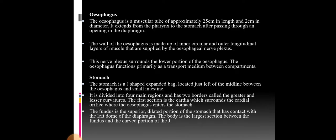The next organ in the GIT is the oesophagus. The oesophagus is a muscular tube of approximately 25 centimeters in length and 2 centimeters in diameter. It extends from the pharynx to the stomach after passing through an opening of the diaphragm. The wall of the oesophagus is made up of inner circular and outer longitudinal layers of muscle that are supplied by the oesophageal nerve plexus, which surrounds the lower portion of the oesophagus. The oesophagus functions primarily as a transport medium between compartments.